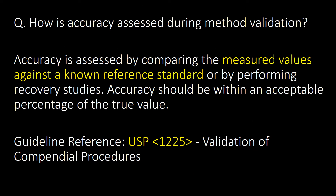How is accuracy assessed during method validation? Accuracy is assessed by comparing the measured values against a known reference standard or by performing recovery studies. Accuracy should be within an acceptable percentage of the true value. Guideline reference: USP Chapter 1225.